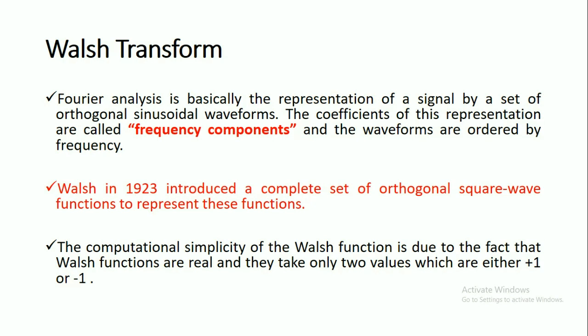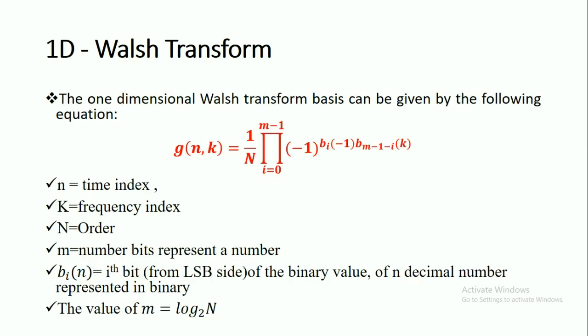The computational simplicity of the Walsh transform is that the values take only two values: either plus one or minus one. This is one of the advantages of the Walsh transform. The 1D Walsh transform is represented as g(n,k) = (1/N) * sum from i=0 to m-1 of (-1) to the power of b_i(n) * b_(m-1-i)(k).